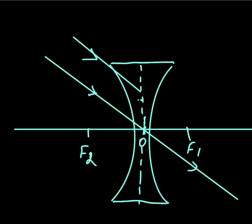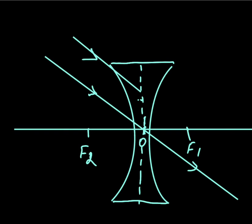The second ray is parallel to the first ray. If the lens were not present, this ray would travel straight in the direction of focal point F1. After striking the concave lens, since the ray is directed toward F1, after refraction it goes parallel to the principal axis. So we now have the refracted ray going parallel to the principal axis.